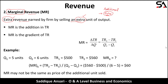Marginal revenue is the addition in total revenue, and it is also the gradient of the total revenue graph. If you draw the total revenue graph, the gradient or slope of total revenue is marginal revenue — the rate of change of total revenue. The formula to calculate marginal revenue is change in total revenue over change in quantity: (TR2 − TR1) / (Q2 − Q1).